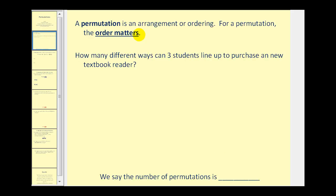A permutation is an arrangement or ordering of items. The main thing to remember for a permutation is that the order matters. So if we want to know how many different ways three students can line up to purchase a new textbook reader, this would be a permutation since the order matters.